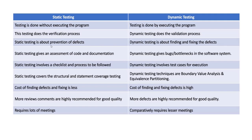Static testing is about prevention of defects — before the code is fully developed, we find and prevent the defect in the early stage. In case of dynamic testing, it is about finding the defect and fixing the defect. In static testing we find defects in the early stage, which is good, but in dynamic testing we find the defect, report it, and get it fixed. Static testing gives an assessment of code and documentation, while dynamic testing reveals bugs or bottlenecks in the software system.